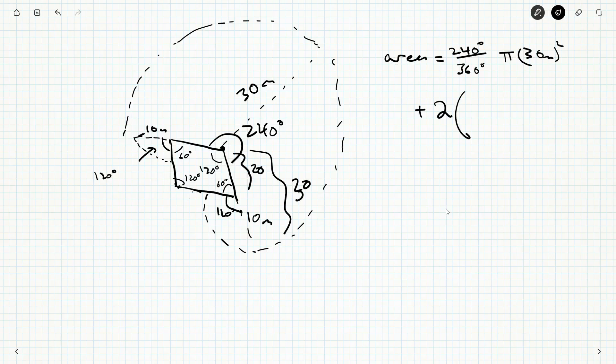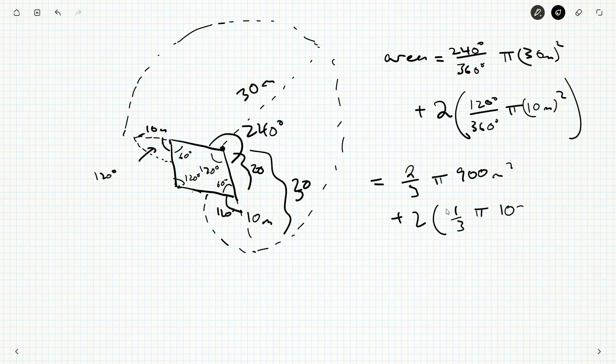So really the area is going to be 240 degrees out of 360 degrees of a full circle, so π times 30 meters squared, plus two copies of a third of a circle each, and those are going to have 10 meters squared.